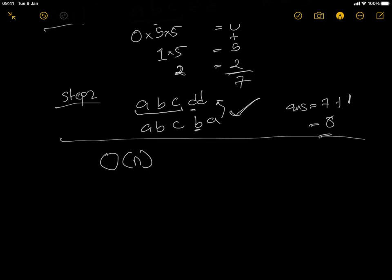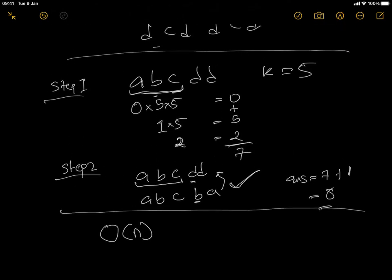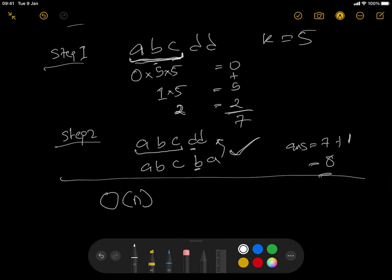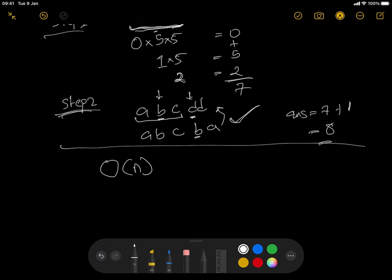The time complexity is O(N). In the first step, we need to consider at least half the string to compute the answer, and N over two is the same as O(N) once we remove the constant. In step two, we might need to touch the entire string when checking whether to add one. So that is also O(N) time. The space complexity is O(1) because we're not really keeping track of anything extra.